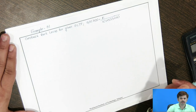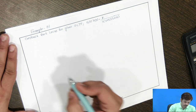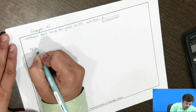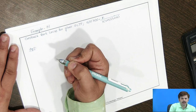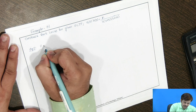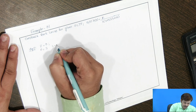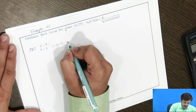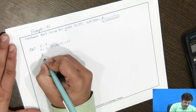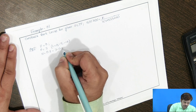Now we solve the first problem: construct the root locus for the open loop transfer function G(s)H(s) = K / [s(s+5)(s+10)]. Step one: count the number of zeros, poles, and branches approaching infinity. The count of zeros Z = 0, the count of poles P = 3, located at 0, -5, and -10. The number of branches approaching infinity is P - Z = 3 - 0 = 3.